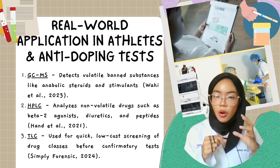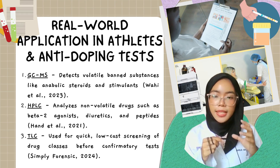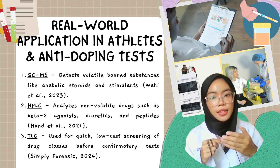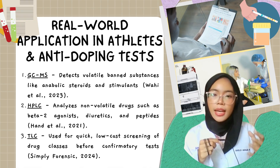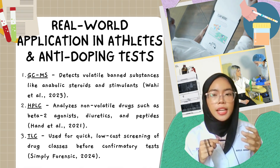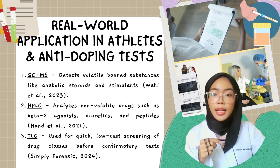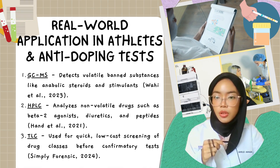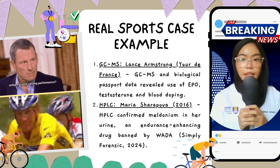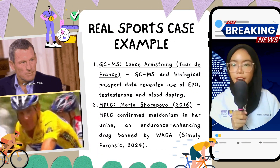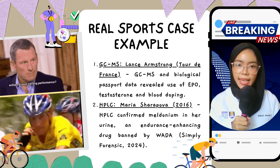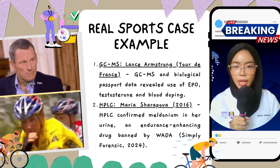Although TLC is an older method, thin layer chromatography is still useful as a quick, cost-effective screening method, especially for large-scale testing in early rounds, and it is also often used before confirmatory testing. Another real anti-doping case involves Lance Armstrong.